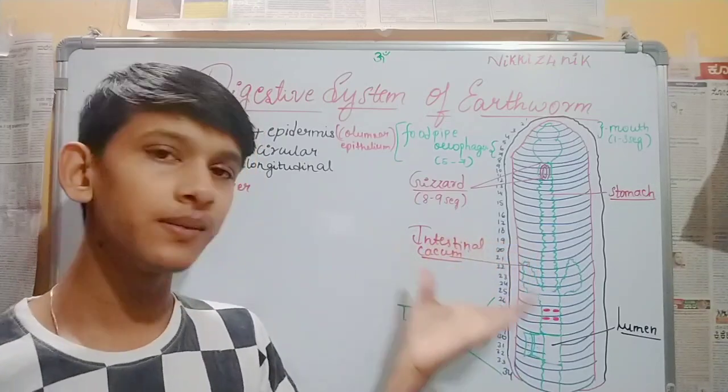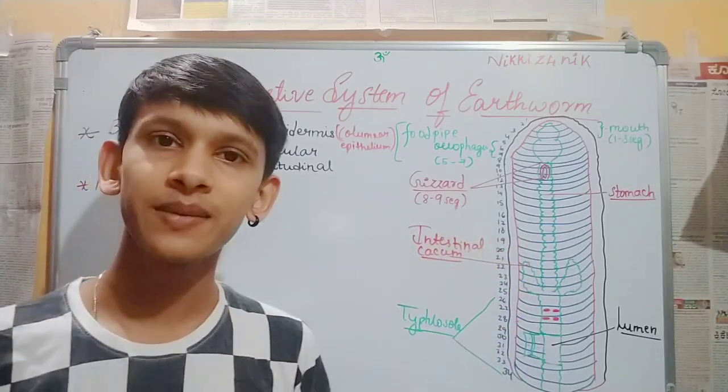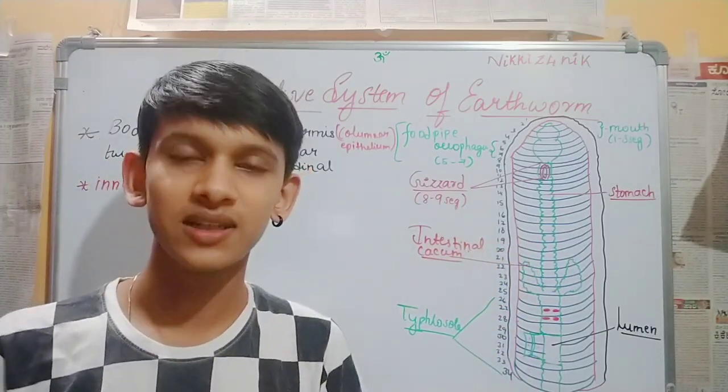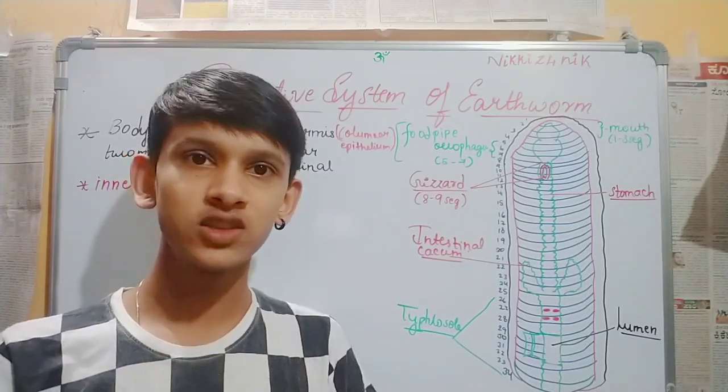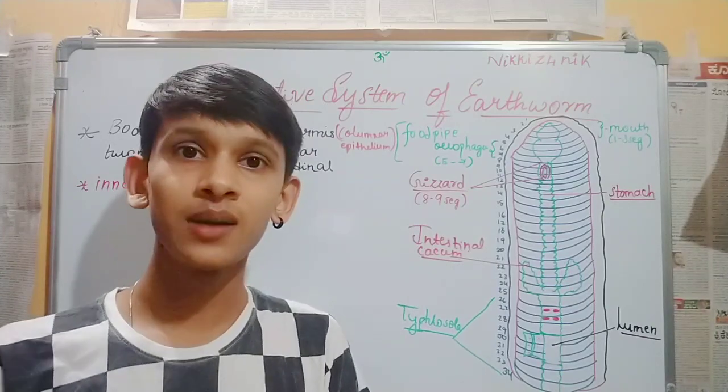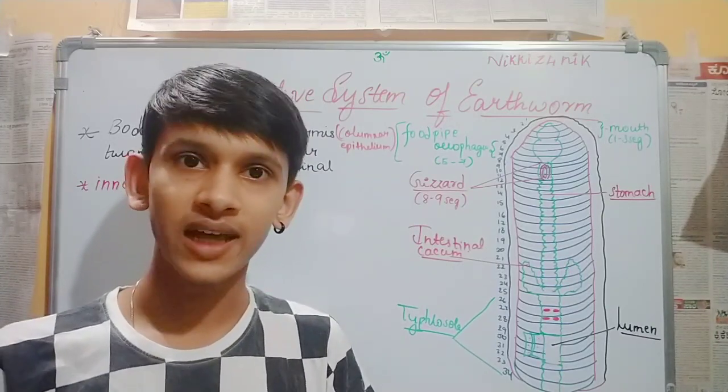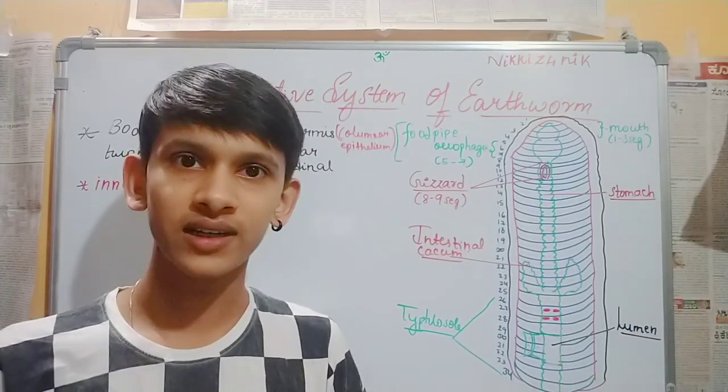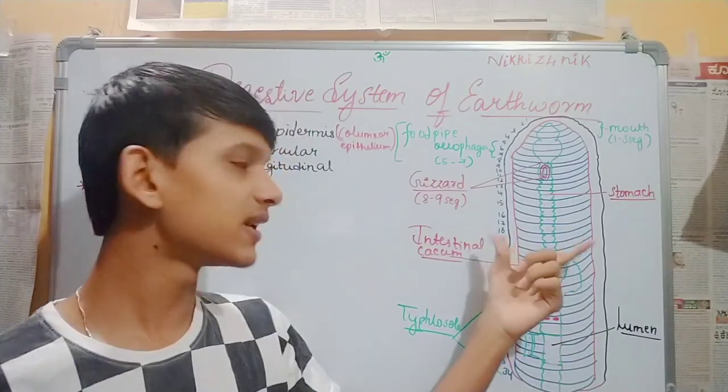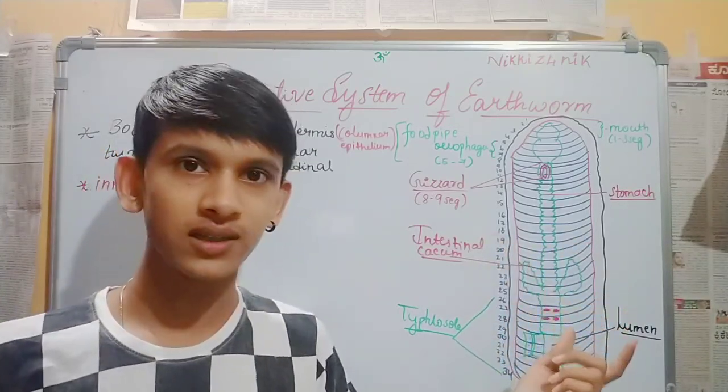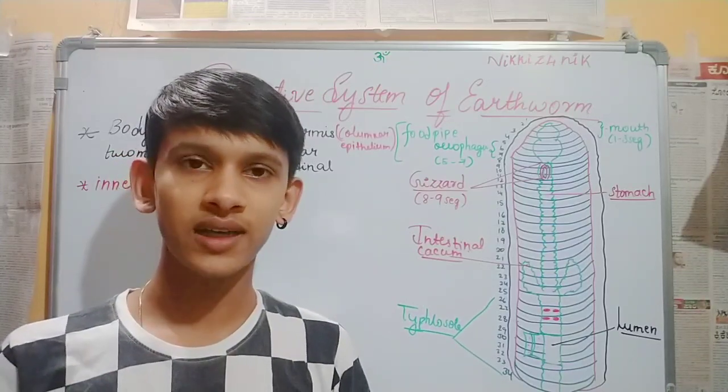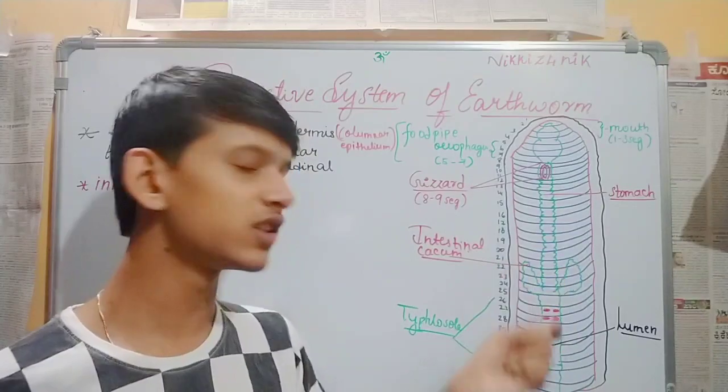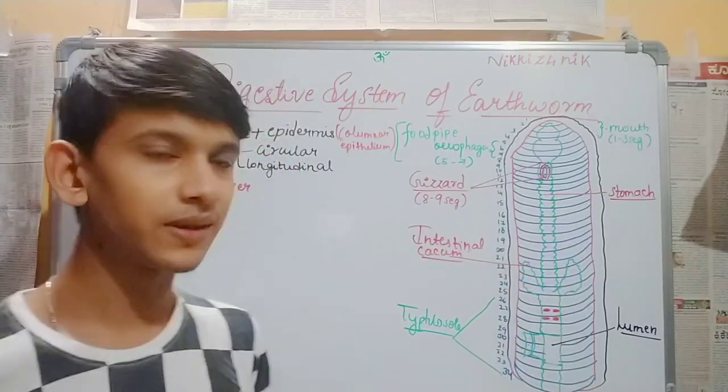There is a Digestive System of Earthworm. In our body, there is a digestive system that extends from mouth to anus. If you understand the human digestive system, it is easier to understand this.